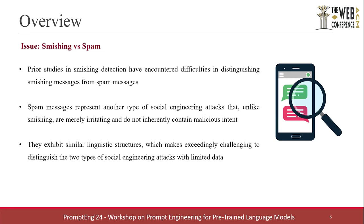Prior studies in smishing detection have encountered another difficulty in distinguishing smishing messages from spam. Spam messages are another type of social engineering attack that, unlike smishing, are merely irritating and do not inherently contain malicious intent. They exhibit similar linguistic structures, which makes it exceedingly challenging to distinguish the two types of attacks with limited data.